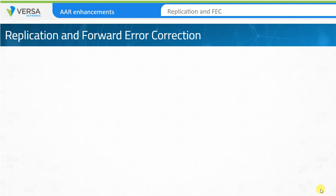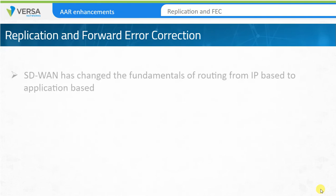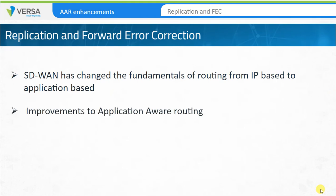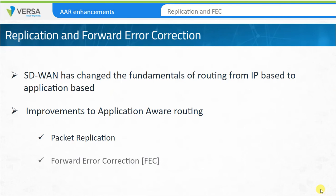As we discussed, SD-WAN policy has changed the fundamentals of traffic routing from IP-based to application-based, but that's not all. SD-WAN has also made several improvements to application-aware routing capabilities. In this section, we'll look at two more improvements: packet replication and forward error correction, or FEC.